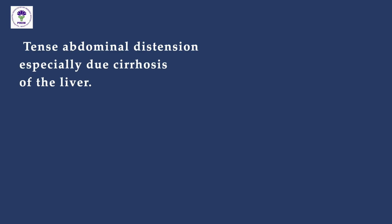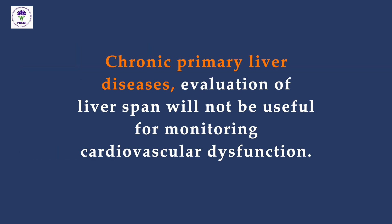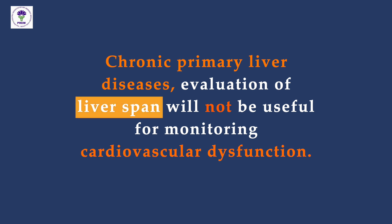Another important exception is tense abdominal distension, especially due to cirrhosis of the liver. In chronic primary liver diseases, evaluation of liver span will not be useful for monitoring cardiovascular dysfunction.